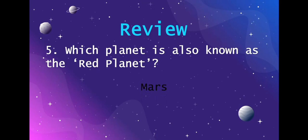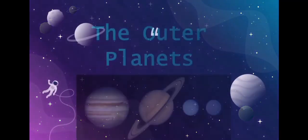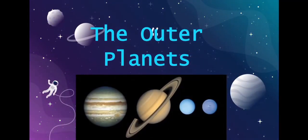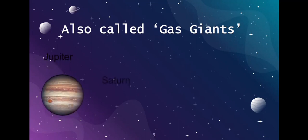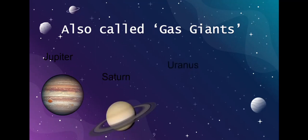Let's move on to the outer planets. The outer planets are also called the gas giants — they are large and made mostly of gas. The names of the four outer planets are Jupiter, Saturn, Uranus, and Neptune.